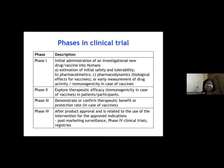Phase three clinical trials are to demonstrate or confirm therapeutic benefit or protection in the case of vaccines. After that, the drug gets approved, and subsequently phase four involves post-marketing surveillance, phase four clinical trials, registries, etc.